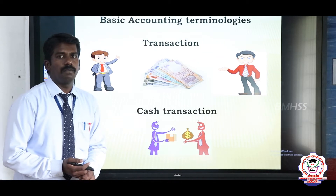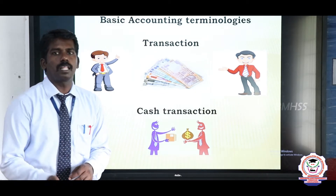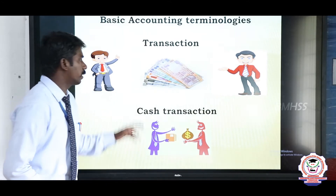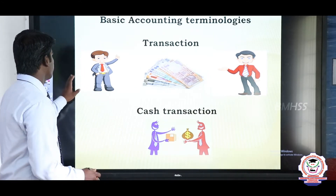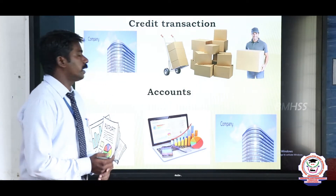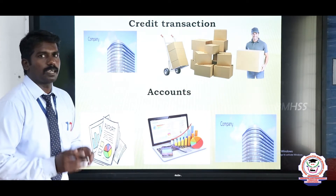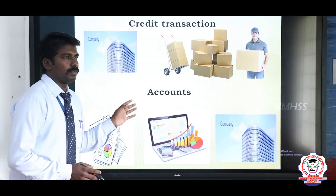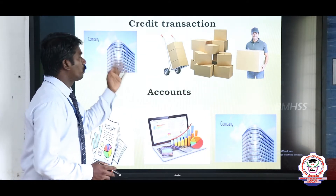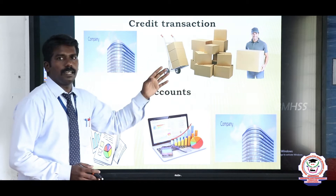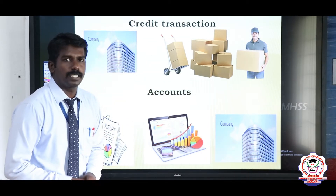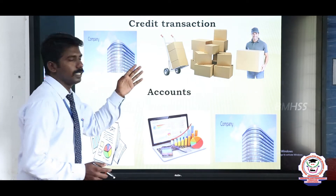When goods are sold to another person and cash is immediately received from the buyer, it is called a cash transaction. Next one is the credit transaction. Credit transaction means a transaction that occurs at present — for example, one person buys goods from a company and then at a later period he will pay the amount for the purchase of goods. It is called a credit transaction.